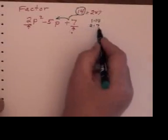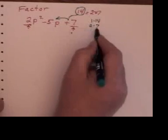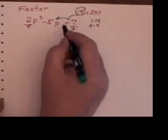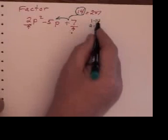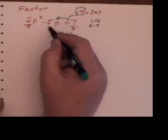Now 2 and 7 add up to 9. This says plus, so I need to add them. 1 and 14 add up to 15. So none of these actually add up to 5.